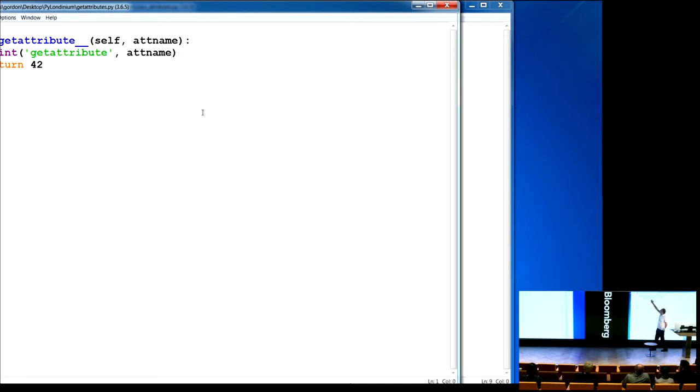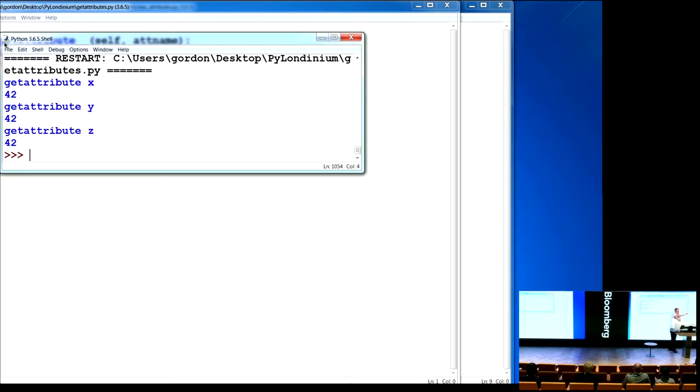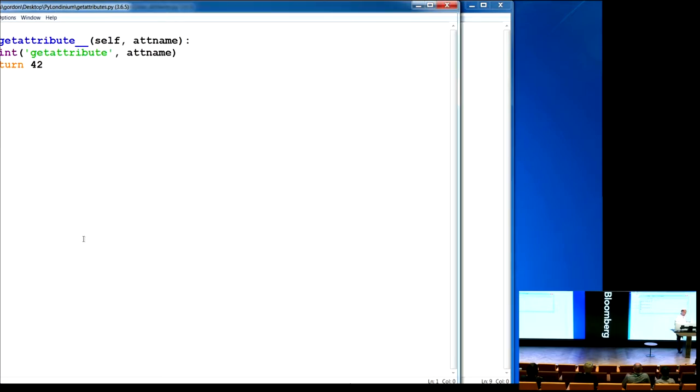We have a class here. We've decided to implement getattribute. We've got a simple object here. And then we print a bunch of attributes that don't exist. With the getattribute hook, what this means is that this method gets both the object and the attribute we're dealing with. In this case, I've just unconditionally returned 42. Let me just run the code, and in each case, we get x, y, z.